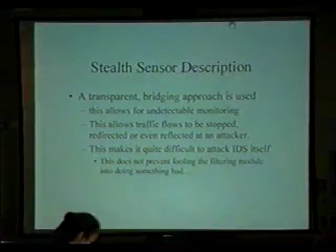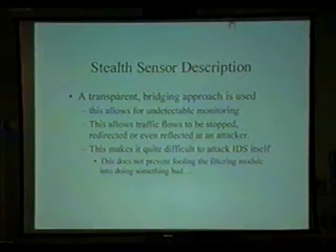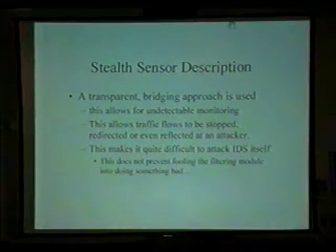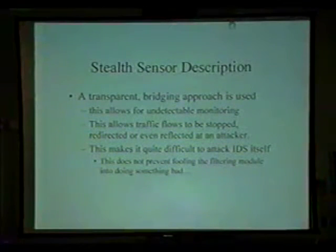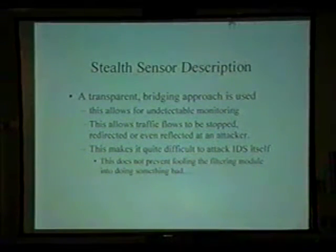The stealth sensor uses a transparent bridging approach, which allows for relatively undetectable monitoring. Traffic flows can be stopped because it's also a firewall — redirected or even reflected back at an attacker. I kind of like the mirror target on the new IP tables, actually. It makes it difficult to attack the IDS itself — it's bridging. I would love to see some attacks on bridging IDSs; that would be a very interesting paper. I've seen nothing that really talks about it other than denial of servicing them. Finally, it doesn't prevent fooling the filtering module into doing something bad or stupid. If the rules are improperly made, an attacker can send packets at you — knowing you have the system in place — and really make life miserable.